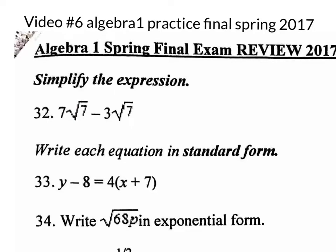So we're on video 6, number 32, and we're going to simplify the expression. Hopefully we remember how to simplify square root values, radical values. Remember, we treat them like if they were variables. So like right here you have 7 square root of 7, take away 3 square root of 7. The answer is simply 4 square root of 7. It's kind of like saying you have 7 apples, take away 3 apples, you're going to have 4 apples left over. Alright, let's move on.